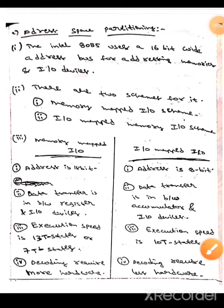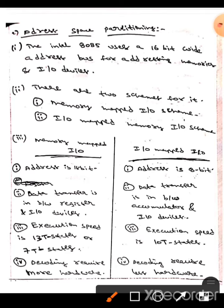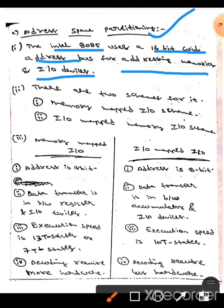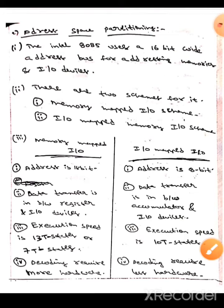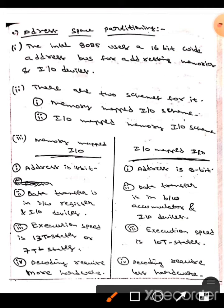Hello guys, I hope you are all fine. Today we are here to discuss about address space partitioning. The Intel 8085 uses a 16-bit wide address bus in order to address memories and input/output devices. There are two schemes for it: they are memory-mapped I/O scheme and I/O-mapped memory I/O scheme. Let's talk about these two.